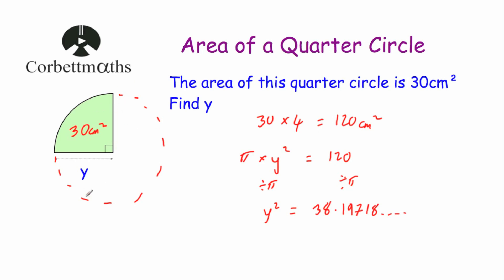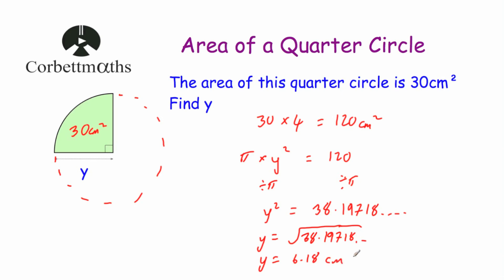What we've done is found the area of the whole circle is 120. We know to find the area of a circle you square the radius and times by pi, so we divided by pi to find y squared. Now we square root to find the radius: y equals the square root of 38.19718…, which gives us y equals 6.18 centimetres to two decimal places. So if you're given the area of a quarter circle, times it by four to get the whole circle, then divide by pi and take the square root to find the radius.